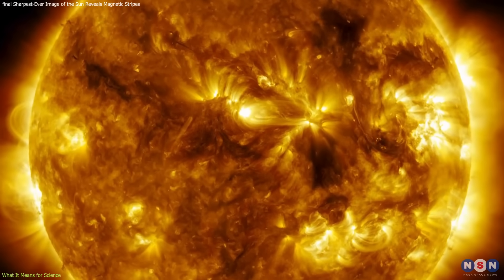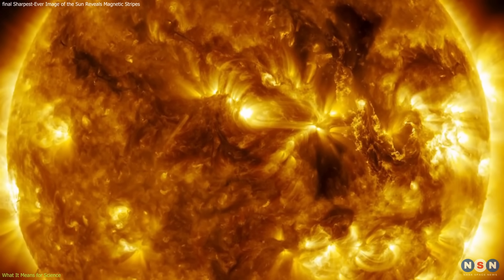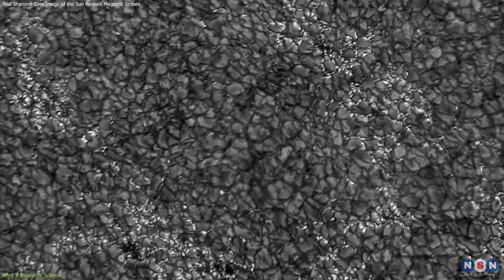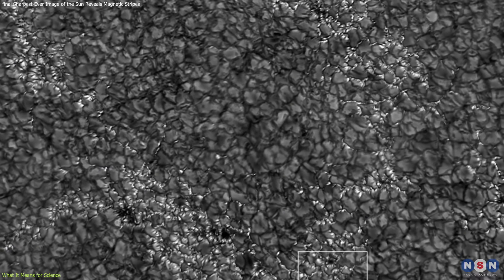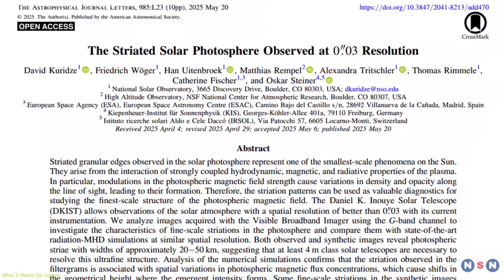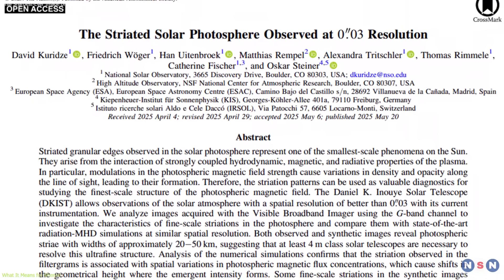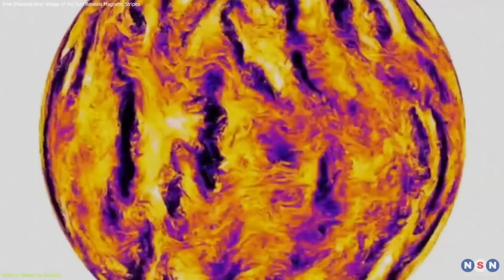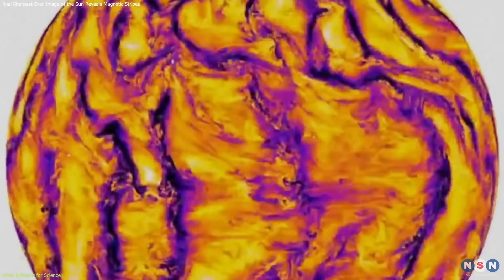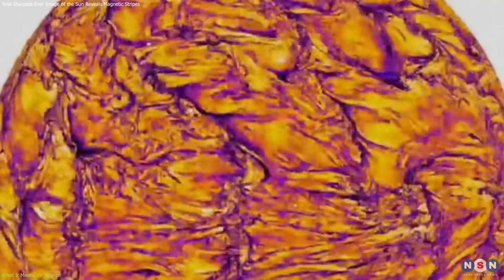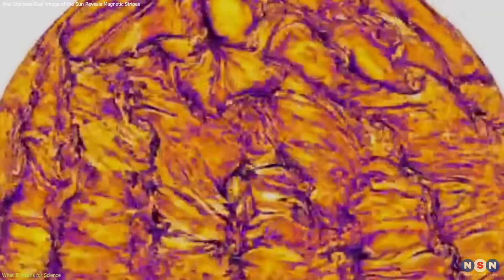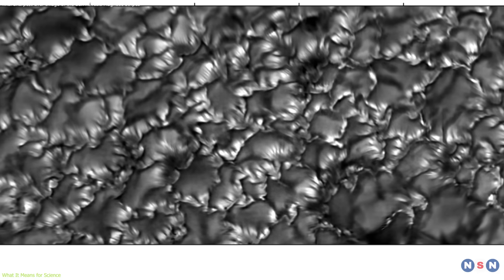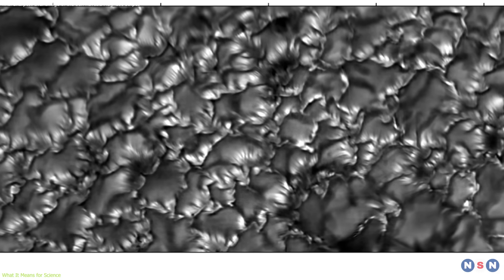It suggests that the Sun's magnetic architecture is far more intricate, potentially forming a multi-layered structure embedded throughout its outer layers. The key scientific value of this discovery lies in what it confirms. For years, high-resolution simulations predicted that fine-scale magnetic sheets could ripple along the edges of convection cells. Now, for the first time, we've directly observed those effects.